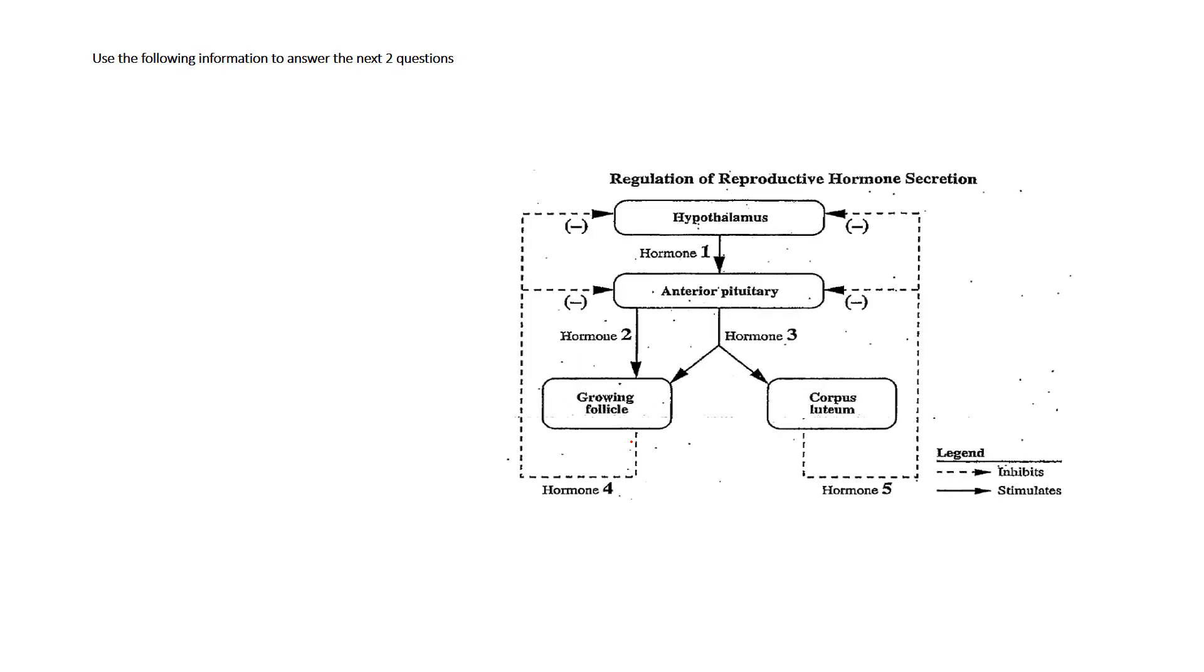Let's take a look at the first one. It says use the following information to answer the next two questions and then they give you this very complex type of flow chart. When you see a question like this, one of the strategies is to just fill out even before you look at the information, fill out what these hormones are, see if you can figure that out before you even look at the question.